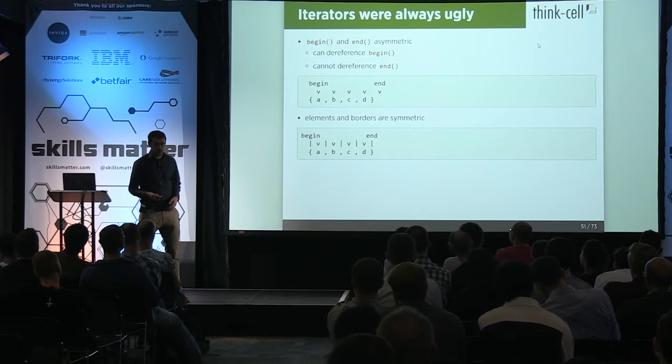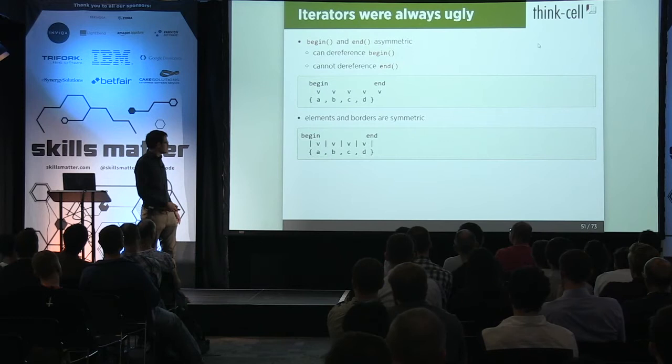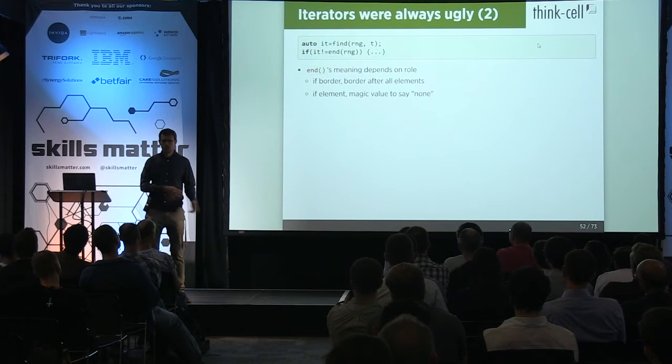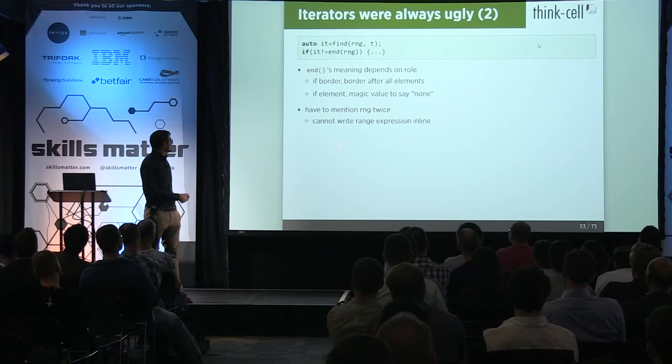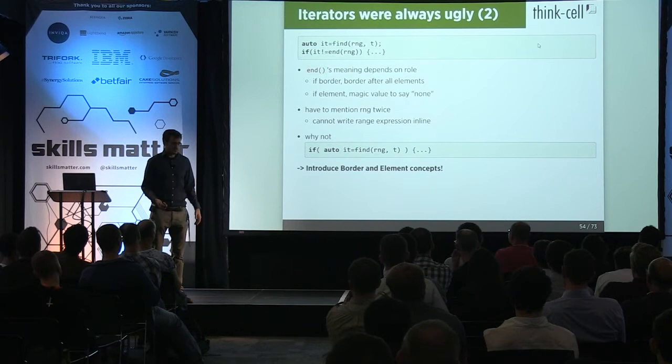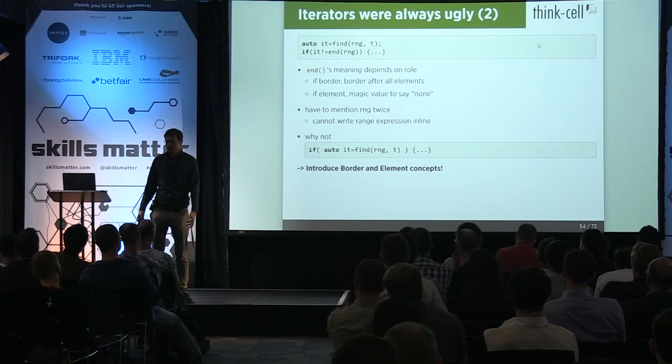With the old iterator model, you'd call find on a range and then compare against end — but end moonlights as both 'no element' and 'the border at the very end.' That's strange. Also, you have to mention the range twice: find(range) and then compare against range.end(). An element if it points to nothing should be null, not end — because end depends on which range you have, and why is that relevant at that point?